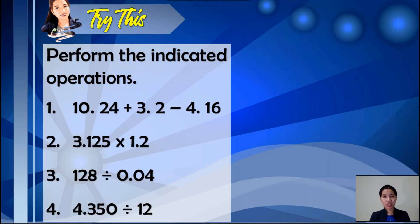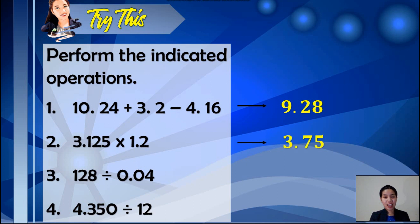After presenting the operations on decimals, it is now your turn to apply what you have learned. You may pause the video so you can answer the following items. Now, let us check your work. Item number 1, the answer is 9 and 28 hundredths. Item number 2, we have 3 and 75 hundredths. Item number 3, it's 3,200. And item number 4, it's 3,625 ten-thousandths.